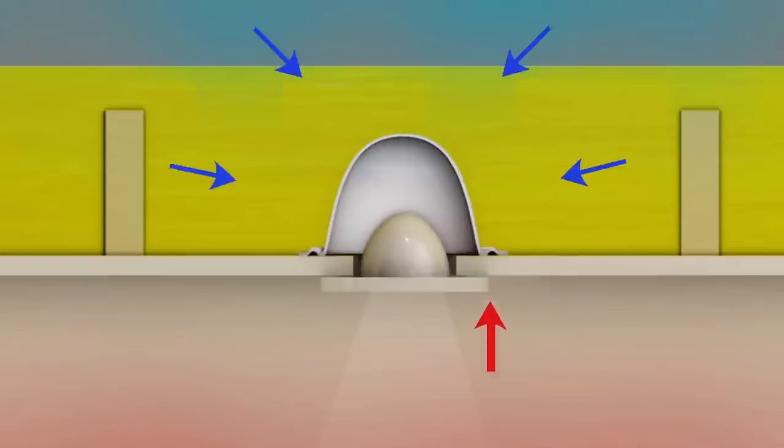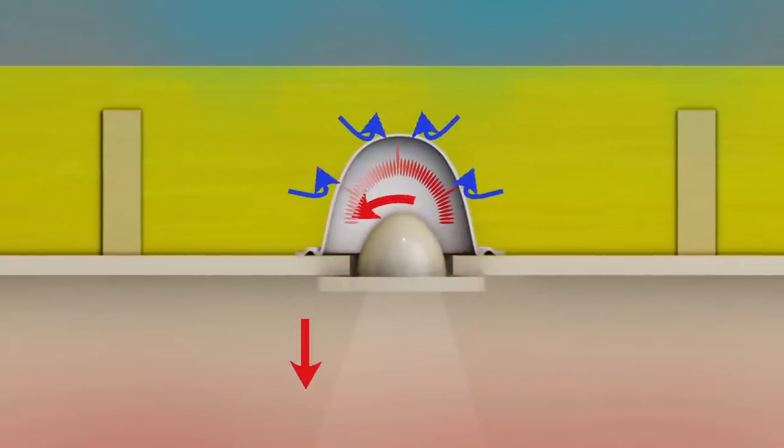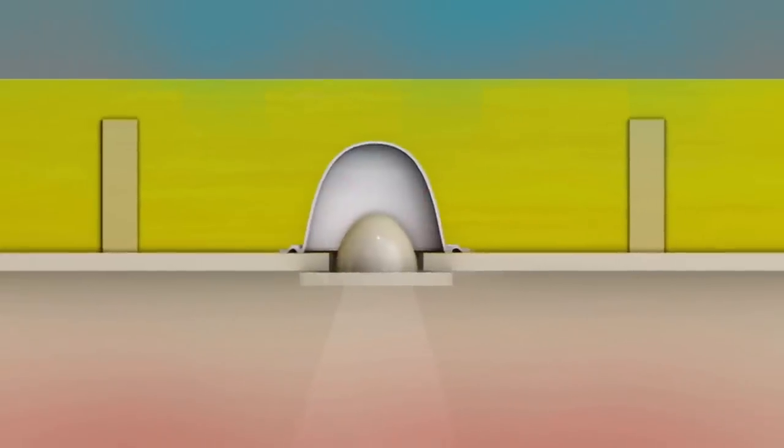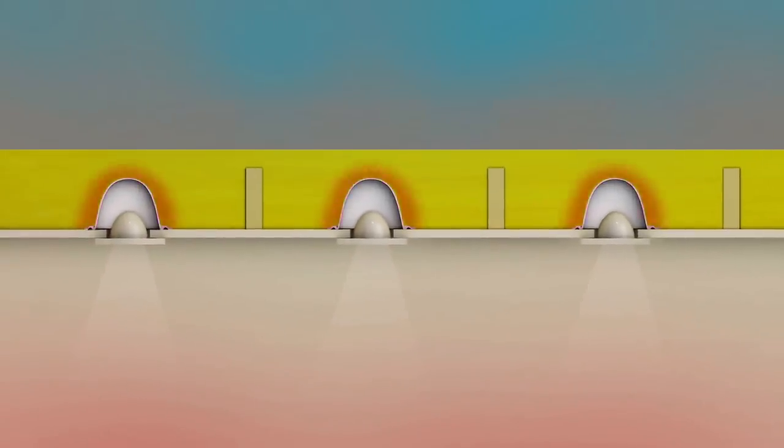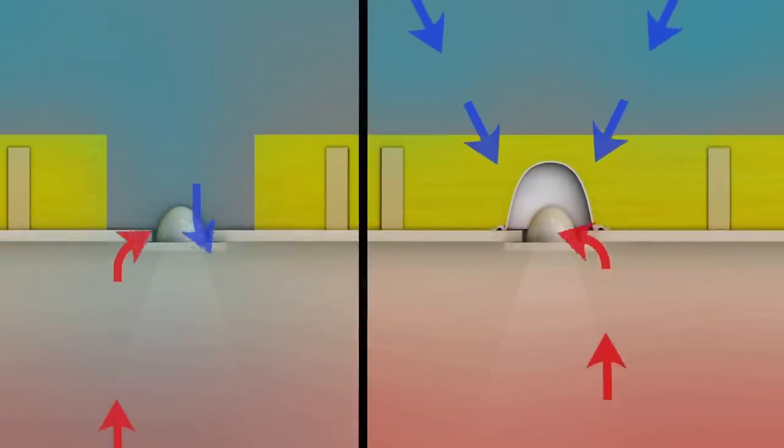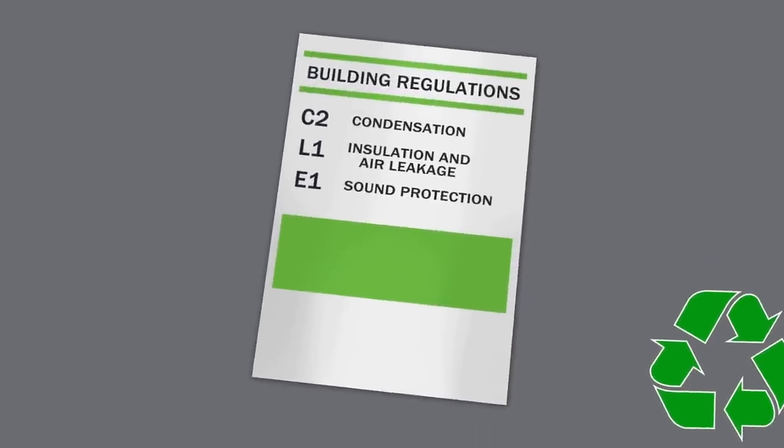It provides an airtight seal which dramatically reduces the air leakage and heat loss. Thermahood also allows for a continuous insulation over and around the light. This drastically improves the insulation effectiveness and meets building regulations.